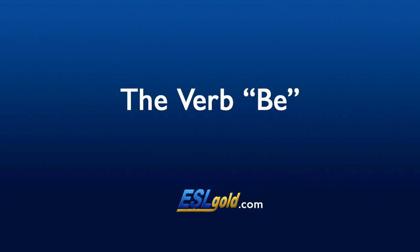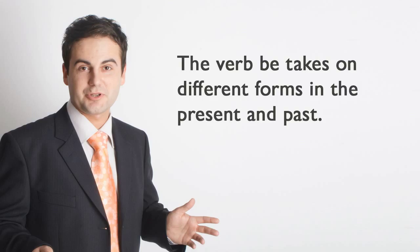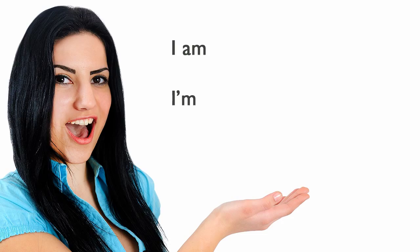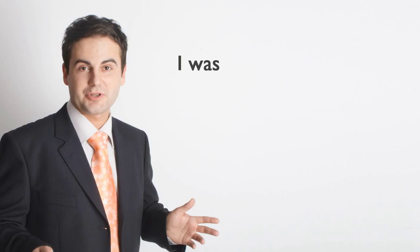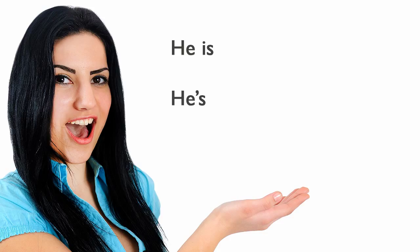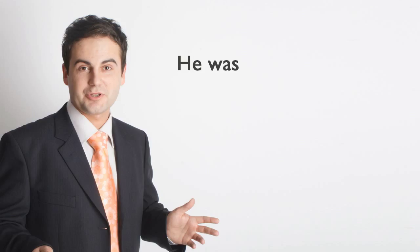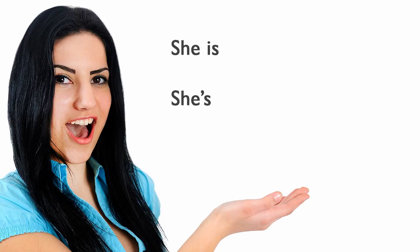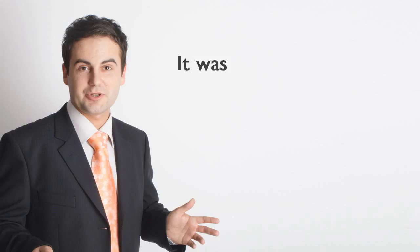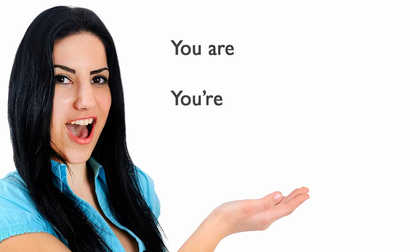The verb be takes on different forms in the present and past. I am, I'm, I was. He is, he's, he was. She is, she's, she was. It is, it's, it was. You are, you're, you were.